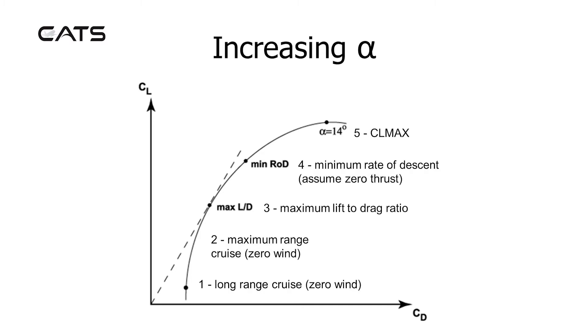Important points on the CL-CD polar curve. Point 1 is the speed for long range cruise in zero wind. Point 2 is the maximum range cruise speed for zero wind. Point 3 is the maximum lift to drag ratio, and this corresponds to a tangent from the origin.